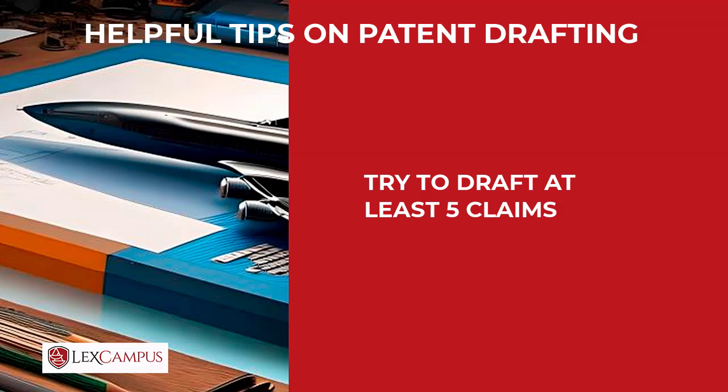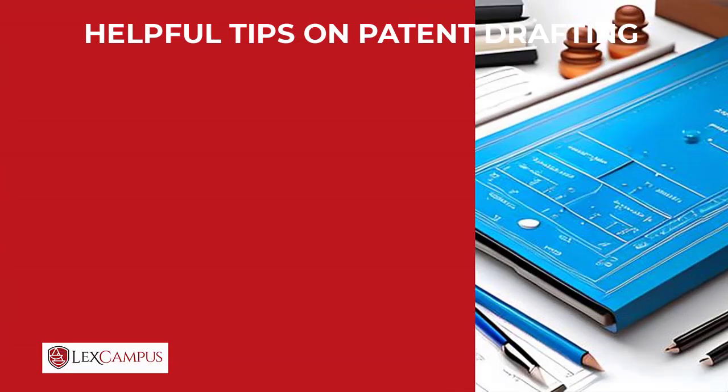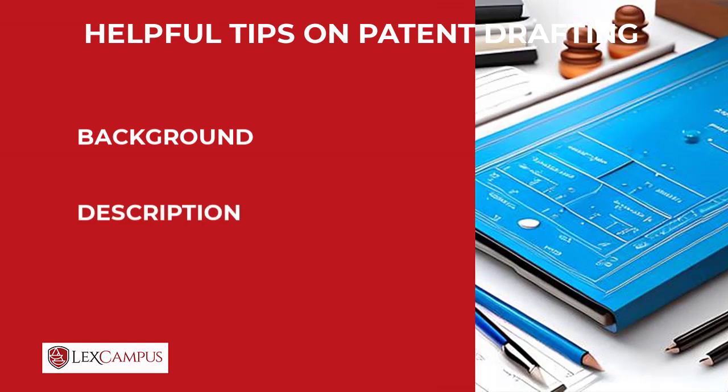You can do more, but five claims should be a minimum. You should also ensure that the other parts of the specification are there: there is a background of the invention, and there is a description. In the description, you will have the objects and the background. You will identify a problem that is in the prior art that is solved by the invention and bring out the details.